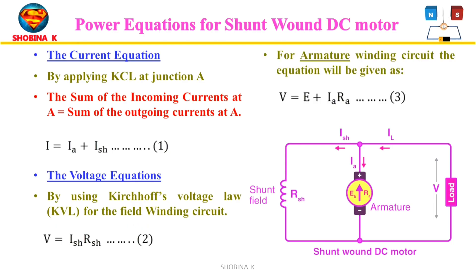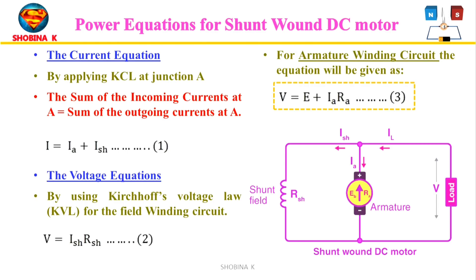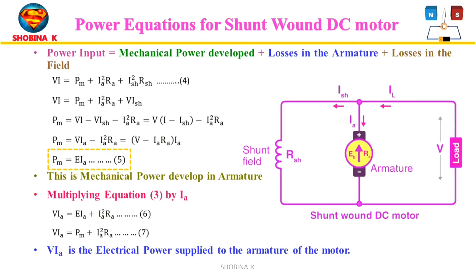The power equation is: power input = mechanical power developed + losses in the armature + losses in the field. Power input is V·I, mechanical power developed is PM, losses in the armature are IA²·RA, and losses in the field are ISH²·RSH. Simplifying, the mechanical power PM = E·IA, which is the mechanical power developed in the armature.